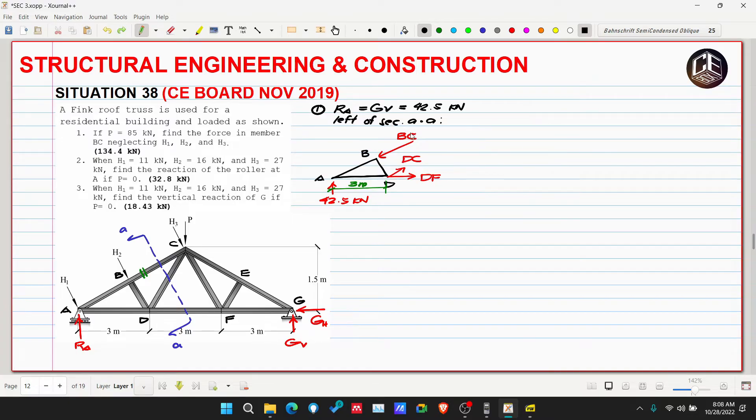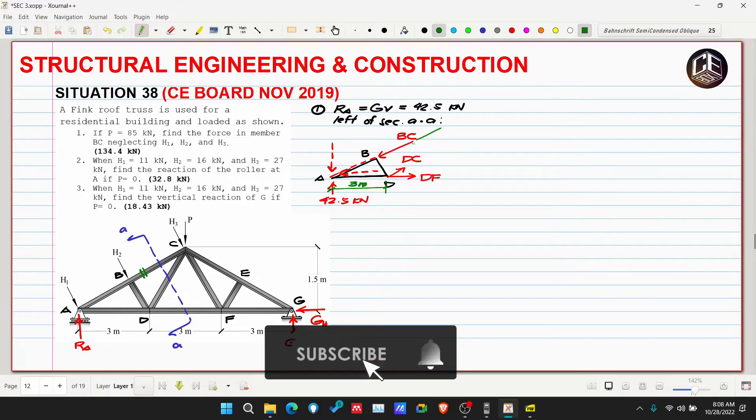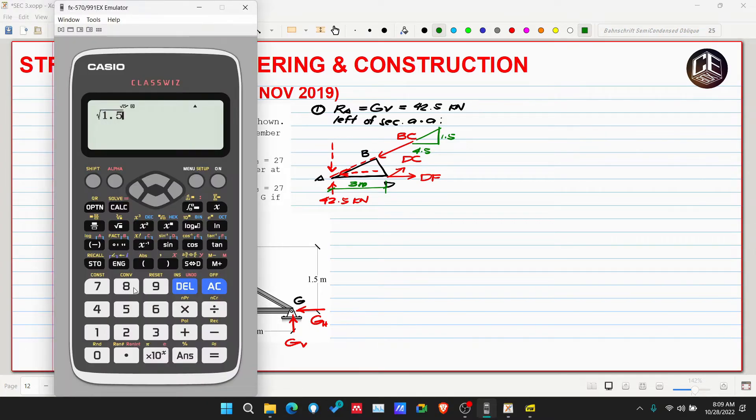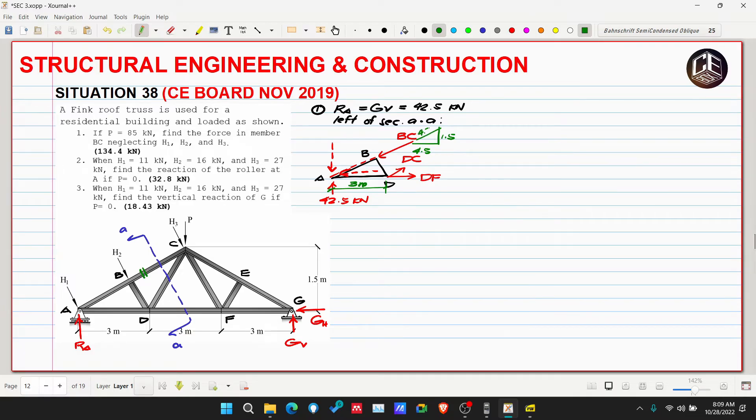The distance is 3 meters. The easiest approach is to take moments at D to cancel out DC and DF, so we can get BC. We extend the line of action of BC to here - this is the vertical component. This is 3 plus half of 3, which is 1.5, so 4.5. Our vertical is 1.5, horizontal is 4.5. The hypotenuse is 1.5 squared plus 4.5 squared equals 4.743 meters.